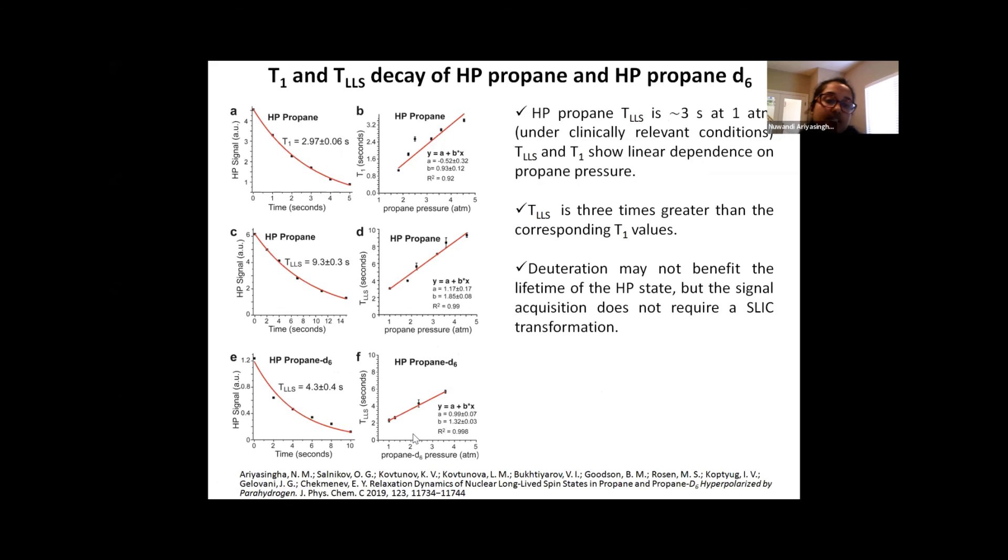So if you compare this sequence with the previous two sequences, the major difference is we do not use a SLIC sequence. So that is great. And it is characteristic to the molecule because it gives us anti-phase lines already in this field. It does not require a SLIC transformation. So this is an example of the decay data obtained for propane and deuterated propane. Figure A is the decay curve of hyperpolarized propane, and figure C is the decay curve of hyperpolarized propane when long-lived states are generated, and figure E is the decay curve of deuterated hyperpolarized propane. The plots on the right are the pressure dependencies on the decay constants. As you can see, they show a linear dependence on propane pressure. And if you compare figures A and C, we can clearly see increase of almost a factor of three of the lifetime of the hyperpolarized state when long-lived states are generated. But deuteration does not seem to benefit the lifetime of the HP state. However, it does not require a SLIC transformation for the signal acquisition. So that is a plus.